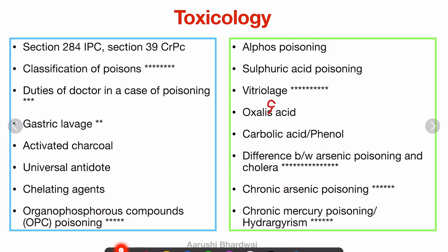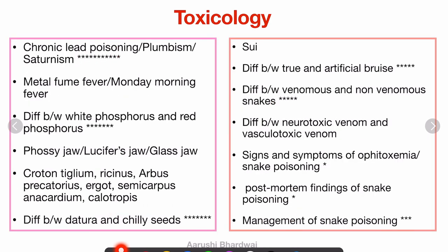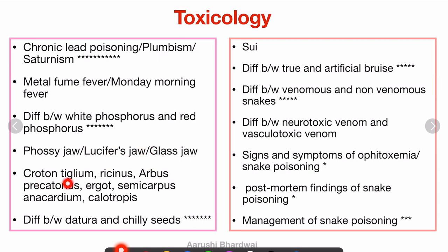Chronic mercury poisoning and chronic lead poisoning — plumbism — are very, very important. Like OPC, arsenic, mercury, and lead are topics in toxicology you cannot miss. Metal fume fever, or Monday morning fever, is a read-through topic. The difference between white phosphorus and red phosphorus is again a good question for viva. Phossy jaw — Lucifer's jaw, last jaw — comes under chronic phosphorus poisoning, so read through it.